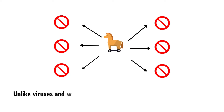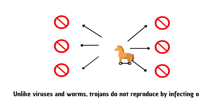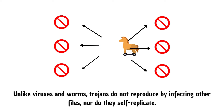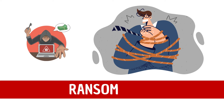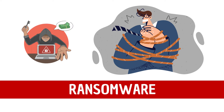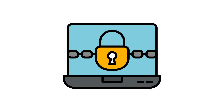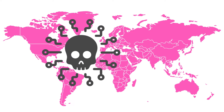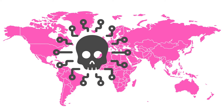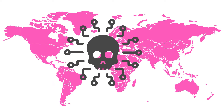Unlike viruses and worms, Trojans do not reproduce by infecting other files, nor do they self-replicate. Meet ransomware — the digital kidnapper. It locks up all your files and asks for money to unlock them. It's been a big problem worldwide today.